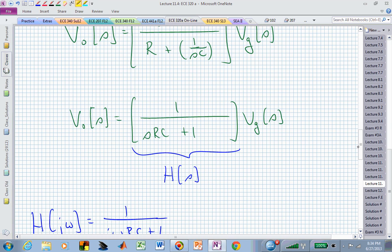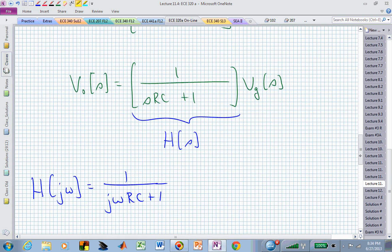Our pole is at the value of S that causes that denominator to vanish, and our pole is at minus one over RC, or minus one over tau.